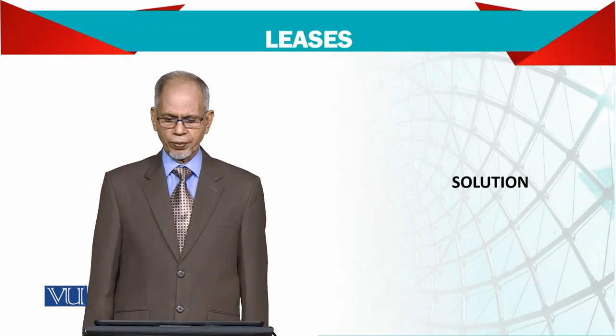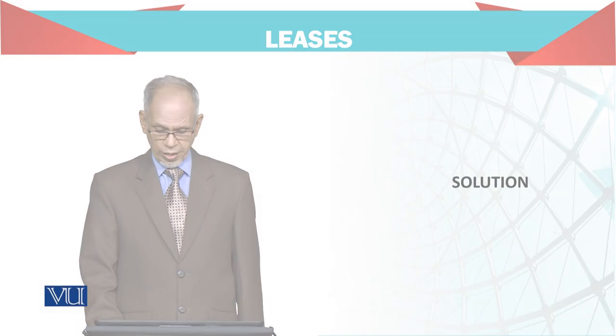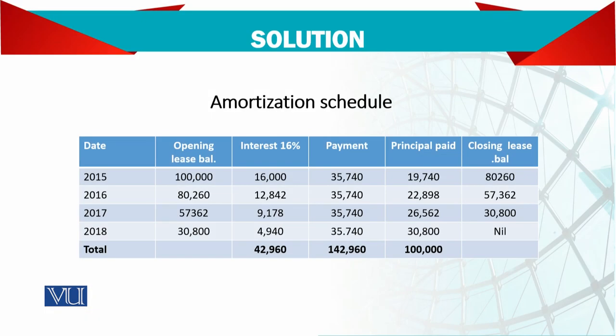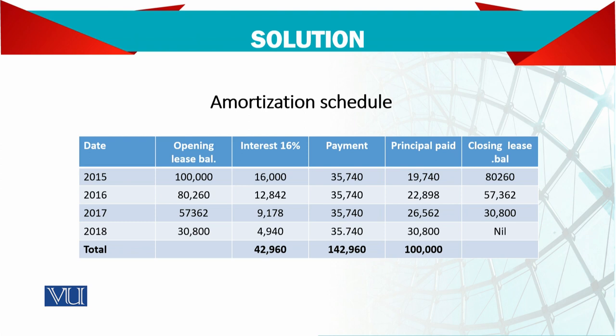Let's see the solution: amortization schedule — the date column, opening lease balance, then interest at the rate of 16%, sometimes called finance cost, and the payment, which will be the same all four years. Then the principal paid — try to understand this: principal paid.